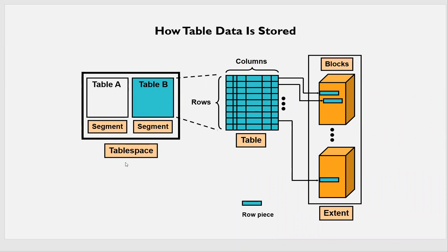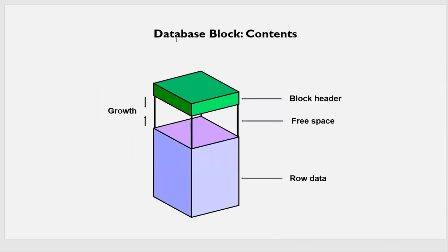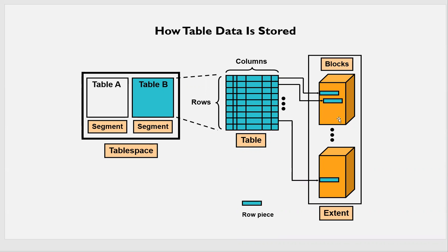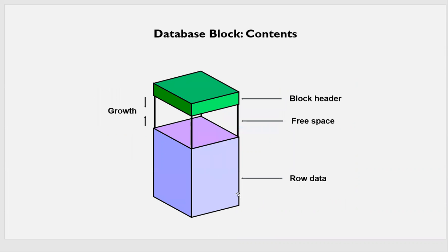And then the combination of tablespaces makes the database. This is typically how data is stored — each and every transaction at the table level is written exactly to the data blocks in a row piece. Each block contains row data — the actual data, whatever we do, like SELECT * or INSERT INTO employee, INSERT INTO table A, INSERT INTO table B — that is the actual data.